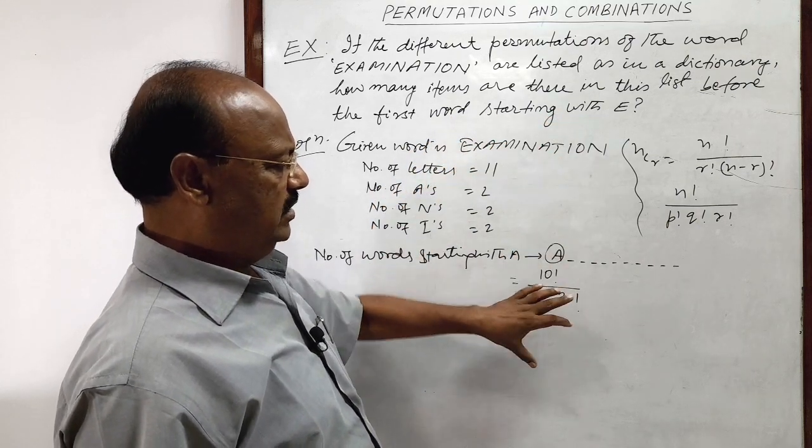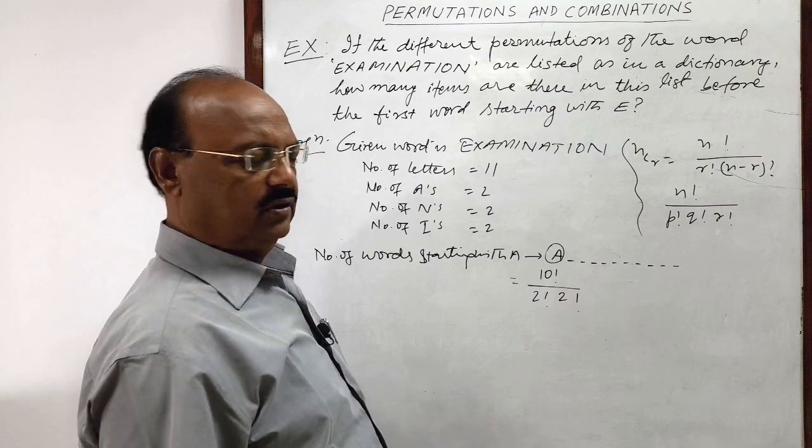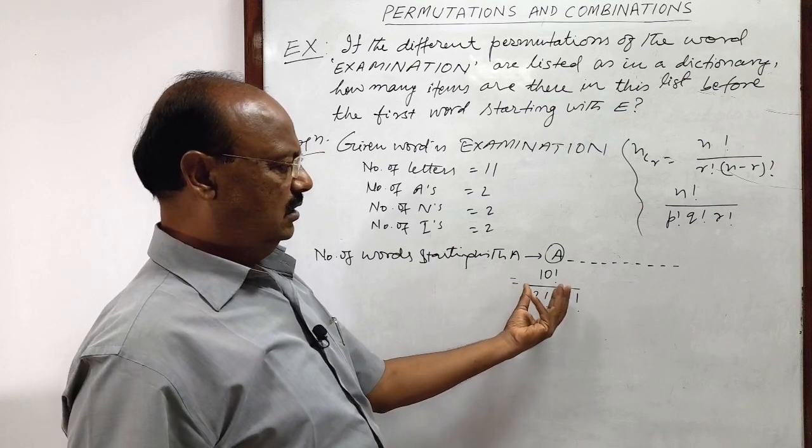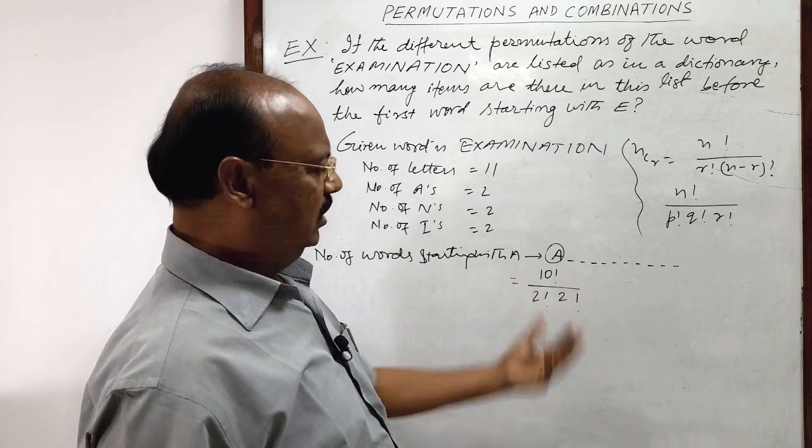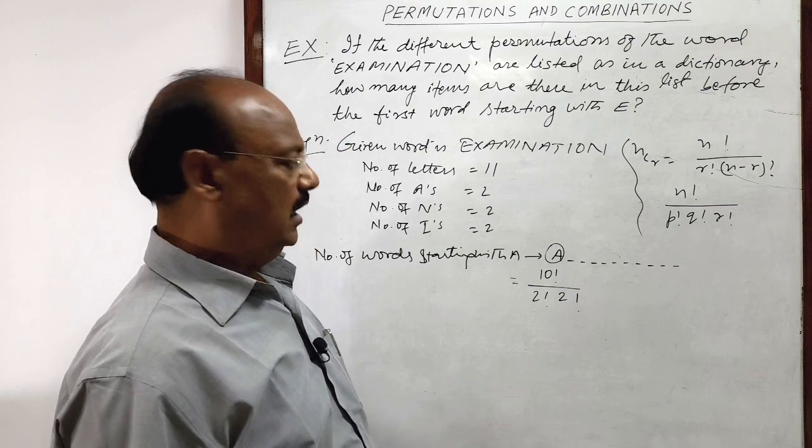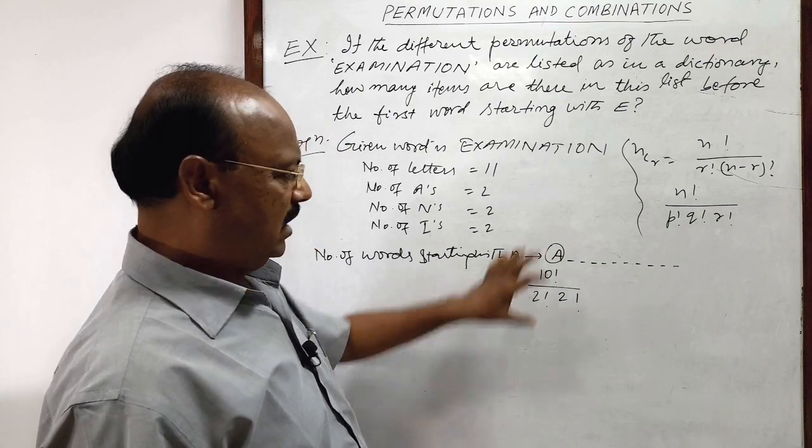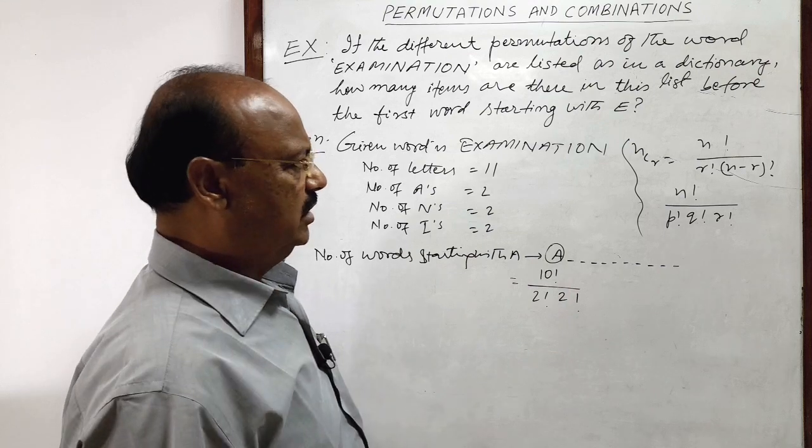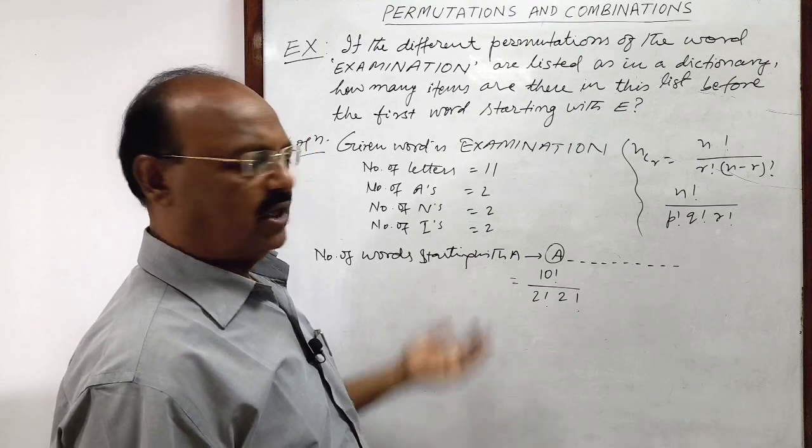So whenever we will calculate this expression, this mathematical expression, you can get this will be the answer. Because these are the number of words starting before the words starting with E.